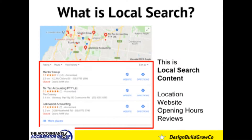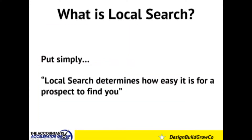They need to be in the right location based on where I am, they need to have their website live, and their website needs to talk about tax accounting. They need to have their opening hours there, because what Google doesn't want to do is send you to a local business that is about to close based on the time it'll take you to get there. The next thing, which is really important, is reviews — does this business have reviews in the first place. That is the first determining factor, followed by whether they are positive reviews and whether there is a mix of reviews. Having reviews is paramount to being found in the local pack. Simply put, local search determines how easy it is for a prospect to find you, and there aren't many businesses that don't want to be found.